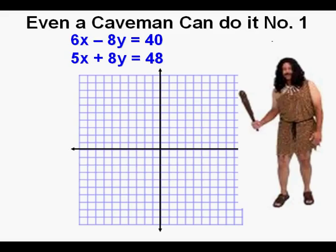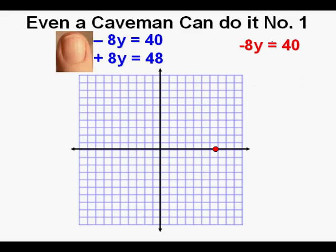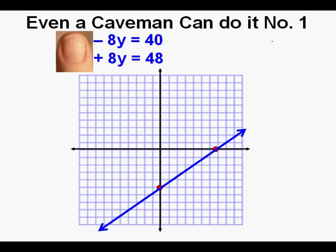He solves the first x-intercept by placing his opposable thumb over the y term, leaving 6x equals 40. 40 divided by 6 is 6 and two-thirds — in a calculator that's 6.666. He marks that on the x-axis. He then covers the x term to solve for the y-intercept: negative 8y equals 40. Dividing 40 by negative 8 gives negative 5. He marks negative 5 on the y-axis as the y-intercept and draws the line connecting the points.